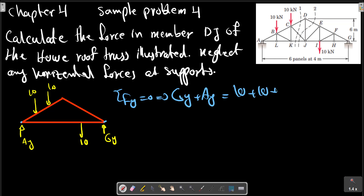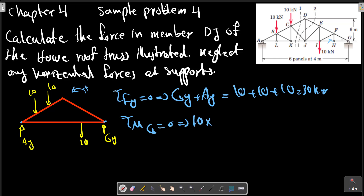The total load is 10 plus 10 plus 10 kilonewtons. Taking sigma M about point G: plus 10 multiplied by 8, minus plus 10 multiplied by 1, 2, 3, 4, and 10 multiplied by 1, 2, 3, 4, 5, minus A_R multiplied by the distance.